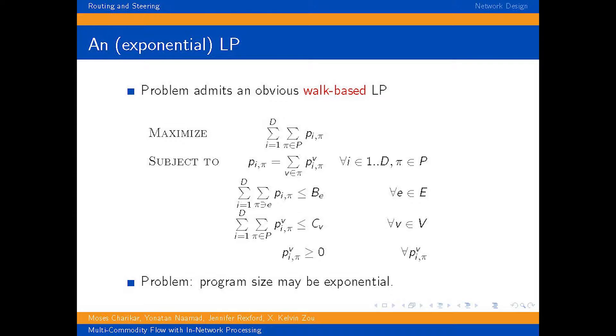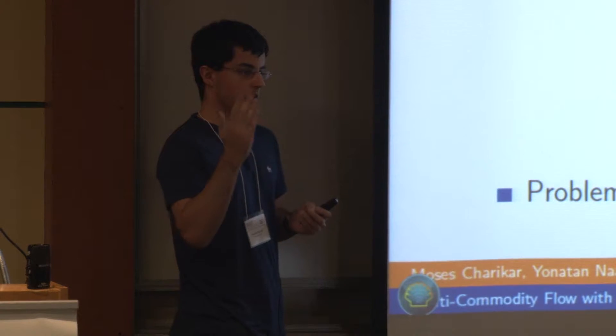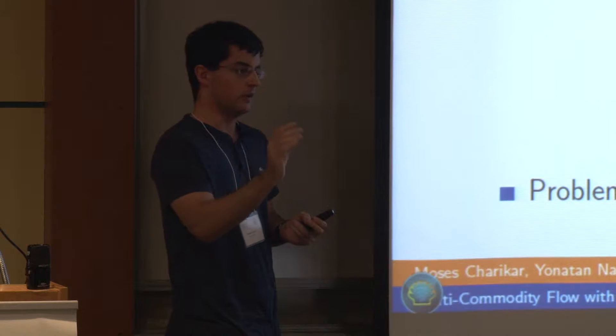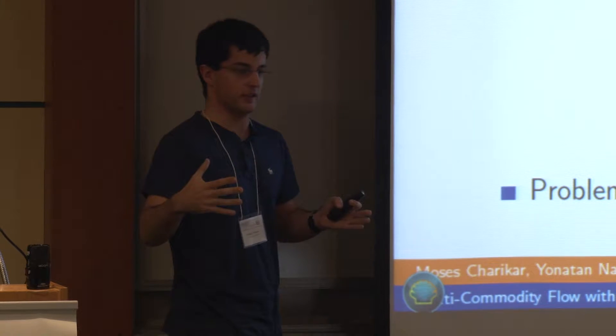This problem admits a pretty natural walk-based linear program, just like multi-commodity flow. So if you temporarily pretend that this constraint is not there, this is more or less just the multi-commodity flow linear program. All we did, all you need to do to construct this LP is to basically add a constraint that says each flow path assigns, each flow path picks one vertex as its processing node. And no vertex ever exceeds its processing capacity after we accumulate all the flows together.